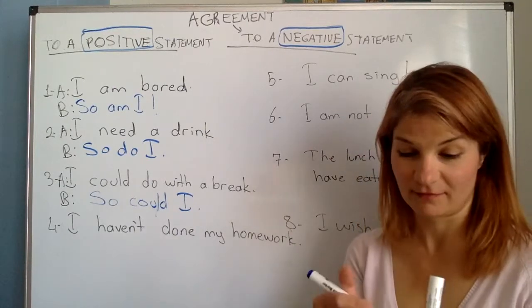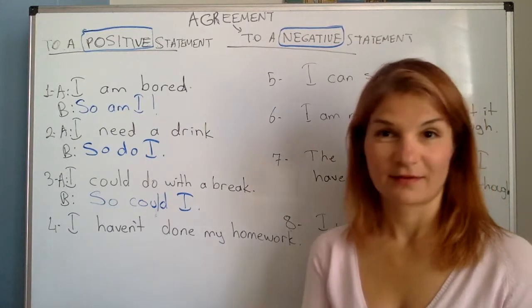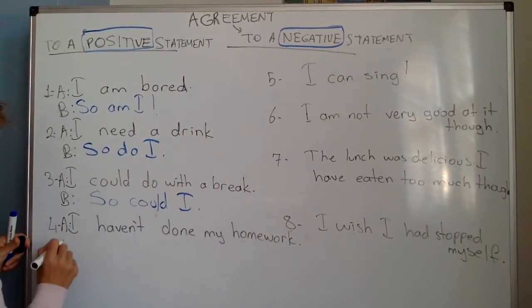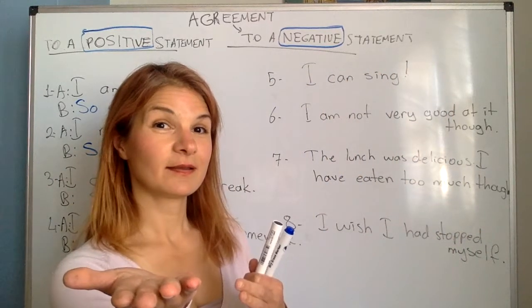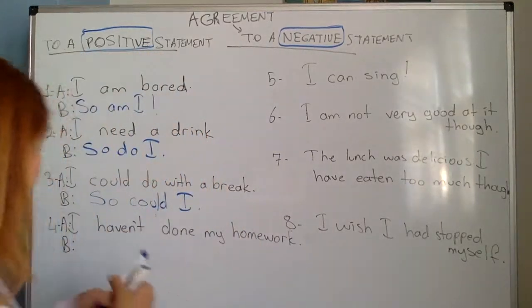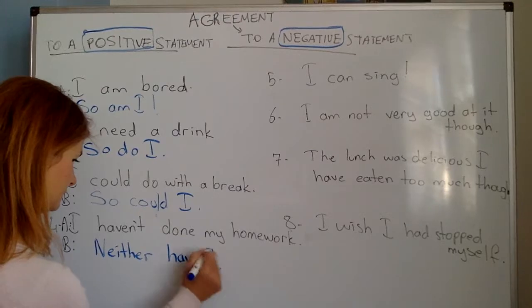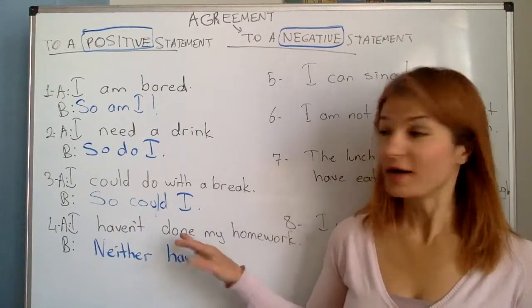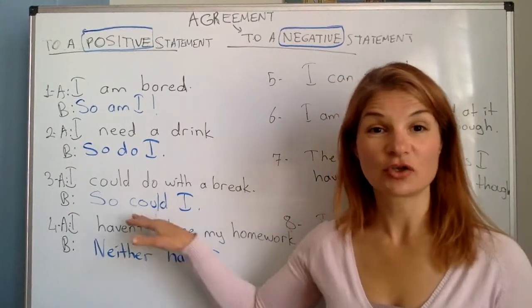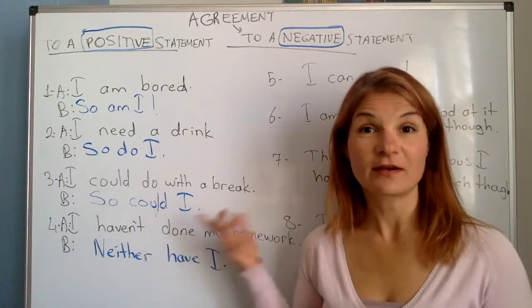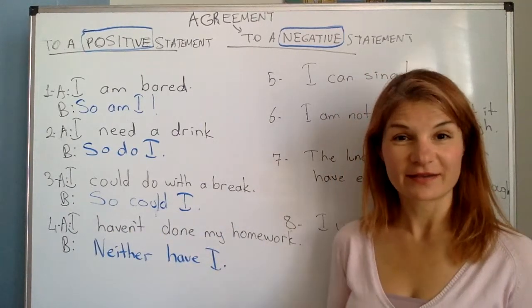Number four: I haven't done my homework — I've been very busy. What would you say? Neither have I. This is a negative statement, so I use 'neither', not 'so'. And the auxiliary here is 'have'. Neither have I.